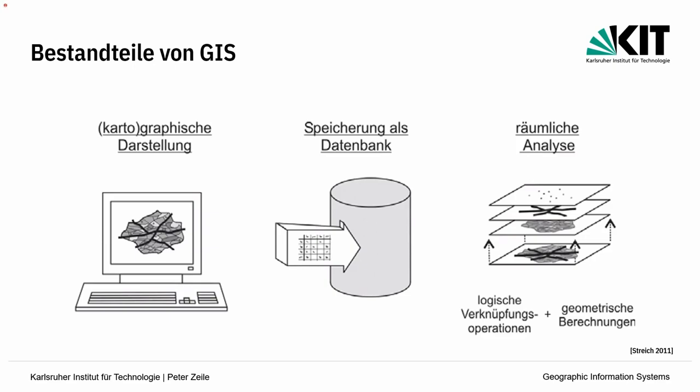Mit Hilfe der Datenbank, die im GIS hintendran steht, hat man die Möglichkeit, räumliche Analysen abzurufen, logische Verknüpfungsoperationen und auch geometrische Berechnungen. Im CAD schneidet und überlagert man, erzeugt aber nur grafische Objekte und nie eine Information, was miteinander verknüpft wurde. Das muss der Benutzer selbst interpretieren. Das GIS-System kann uns das Ergebnis dann auch direkt ausgeben.